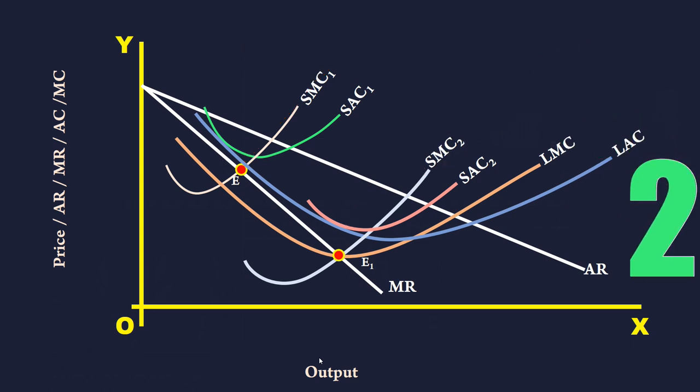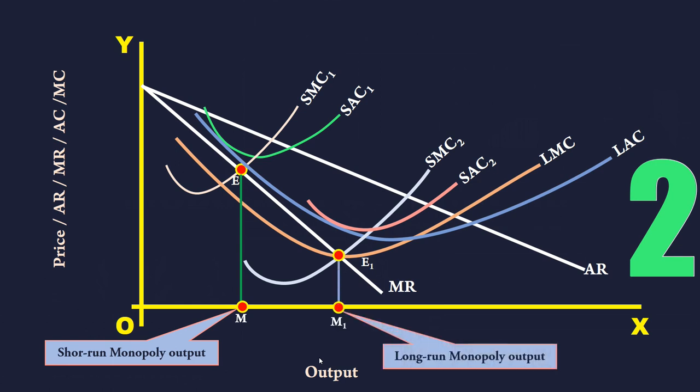2. The short-run monopoly output is small. Long-run monopoly output is larger than short-run monopoly output.